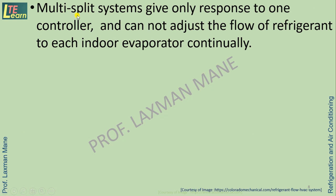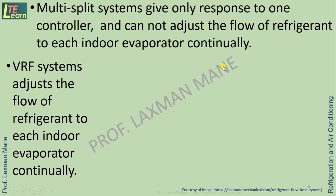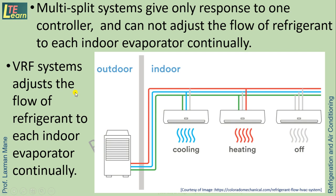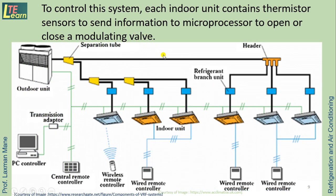In the case of multi-split systems, the system gives response to only one controller and cannot adjust the flow of refrigerant to each indoor unit continually. But in the case of a VRF system, it adjusts the flow rate of refrigerant to each indoor evaporator continually. To control this system, each indoor unit contains thermistor sensors that send information to a microprocessor to open or close a modulating valve.